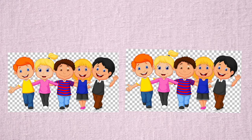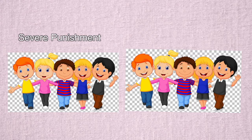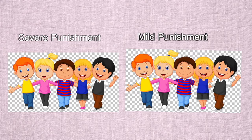The first group is called the severe punishment group, and the second group is called the mild punishment group. This is what the experimenter would say to the children in the severe punishment group.